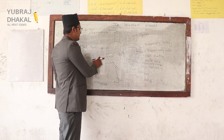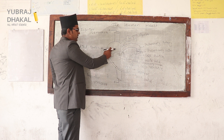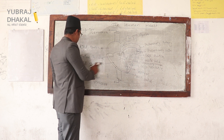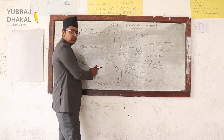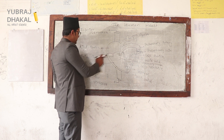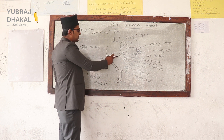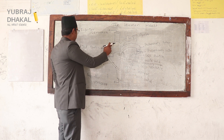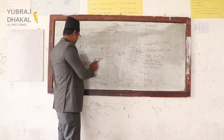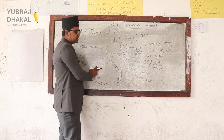The deoxygenated blood will reach the right auricle. Then after, it will reach the right ventricle. After the relaxation of the heart, the tricuspid valve will open, and that deoxygenated blood from the right auricle will go towards the right ventricle.